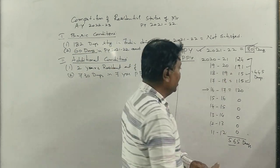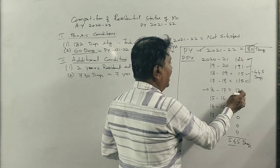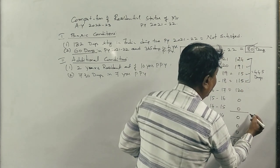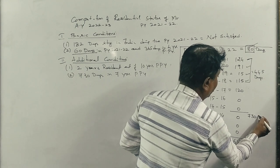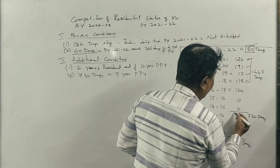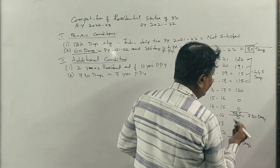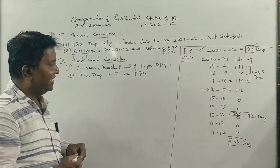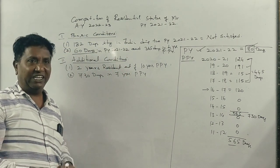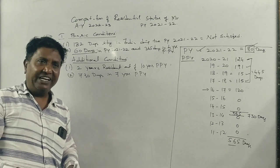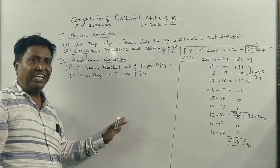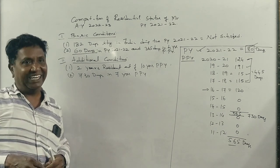7 years, 1, 2, 3, 4, 5, 6, 7. Till here, how many days he should be? 730 days. But how many days is he staying? 565 days. That means he is not satisfied the second additional condition. Even if he fails any one additional condition, then he becomes a not ordinary resident.